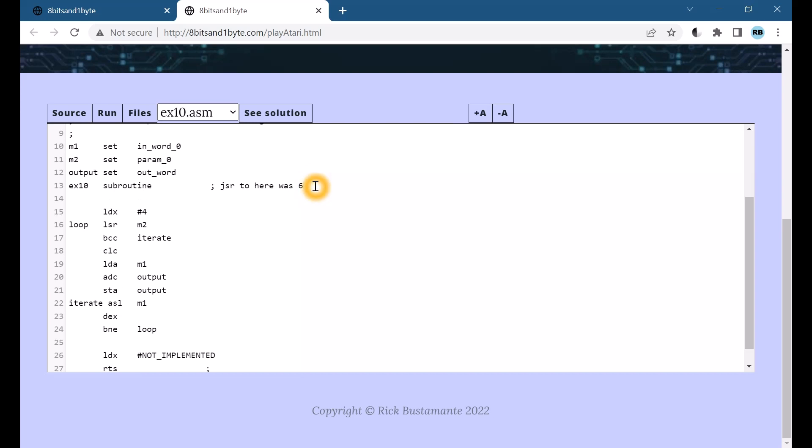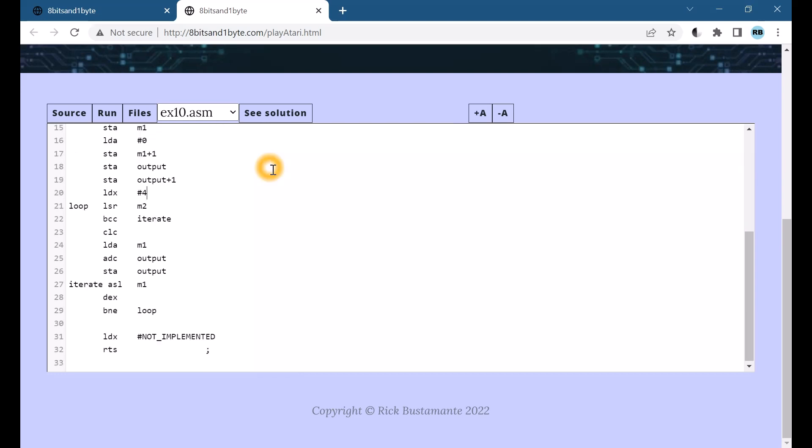The first thing we're going to do is transfer the contents of param 1 to M1 and then extend that to 16 bits, or rather initialize the upper byte of the 16 bits. We're also going to initialize our output to a 16-bit value. So that's done. And we're going to set our loop counter to 8.